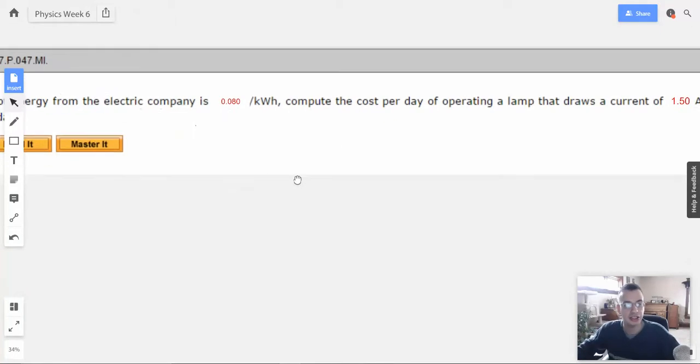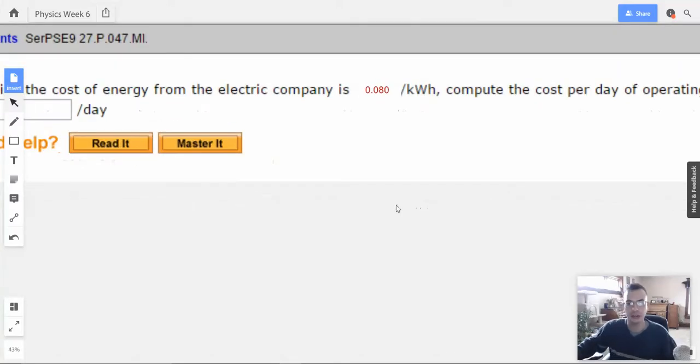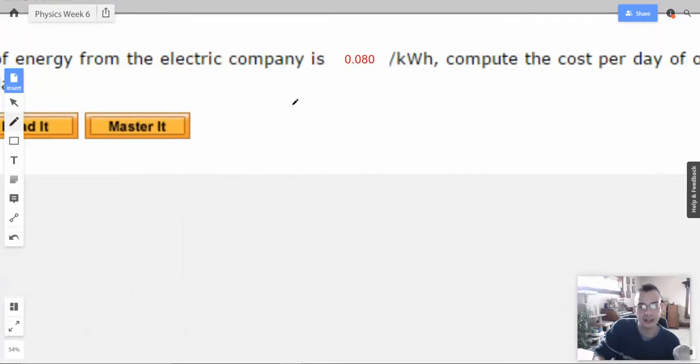Alright, so kilowatt is power, and it's a thousand watts, and hour is time. So when you do power, power is energy per unit of time, so when you multiply it by time, what you get then is an energy. So I'm going to start by converting this, finding out what power we've got here.